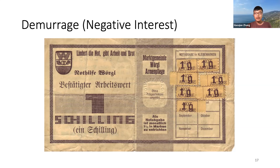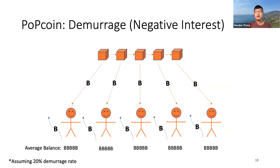In the era of digital currency, the computer program can simply charge the demurrage fee automatically. Now let's apply demurrage to our previous monetary policy — this is exactly the PopCoin monetary policy.